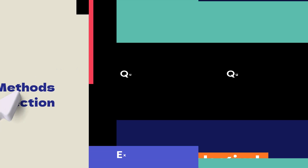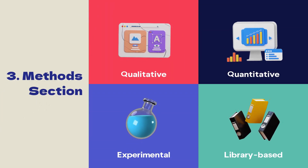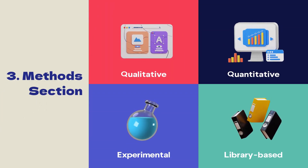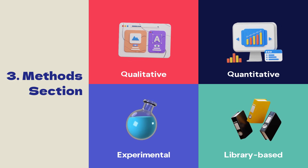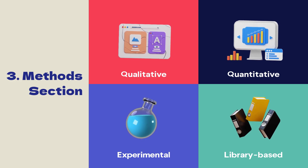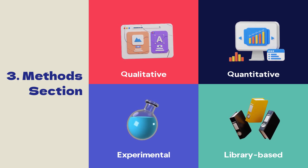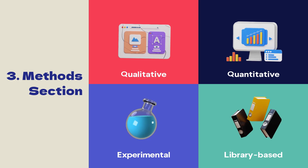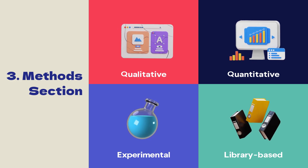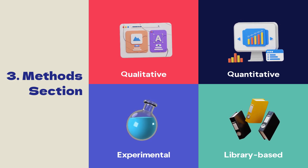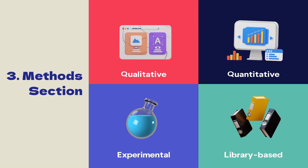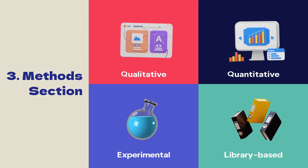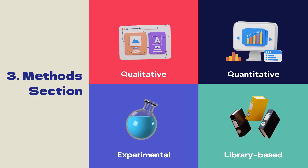The section following the literature review will usually be a discussion of the methods that you have used to collect and analyse the data. This data may be qualitative or quantitative, experimental or statistical, archival or library-based, but make sure that you explain why you chose the approach you did and why you think it is the most suitable choice for your project.